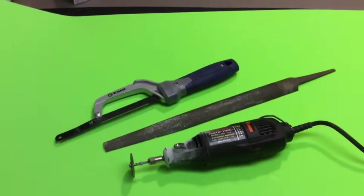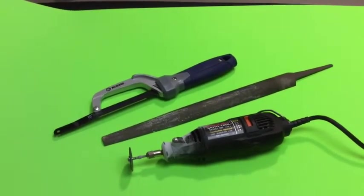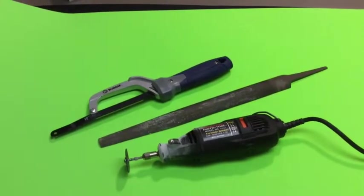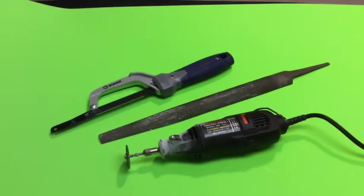The three primary tools you're going to need are a hacksaw, a file, and a Dremel. And that's going to be to cut your channel that will actually hold your iPad in place, whether it's in the elbow or the regular PVC.